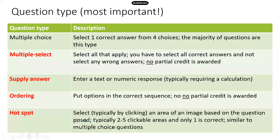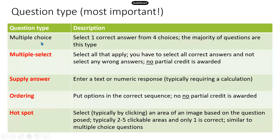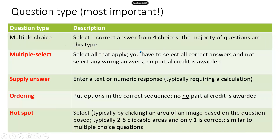I created a table that lists all the different types of questions you're going to see. The multiple choice question is the traditional type — in the current TEAS version, TEAS 6, all questions are multiple choice. Now for TEAS 7, this is still the most common type of question. Most of the questions will be multiple choice, but you are going to see some other types of questions as well.